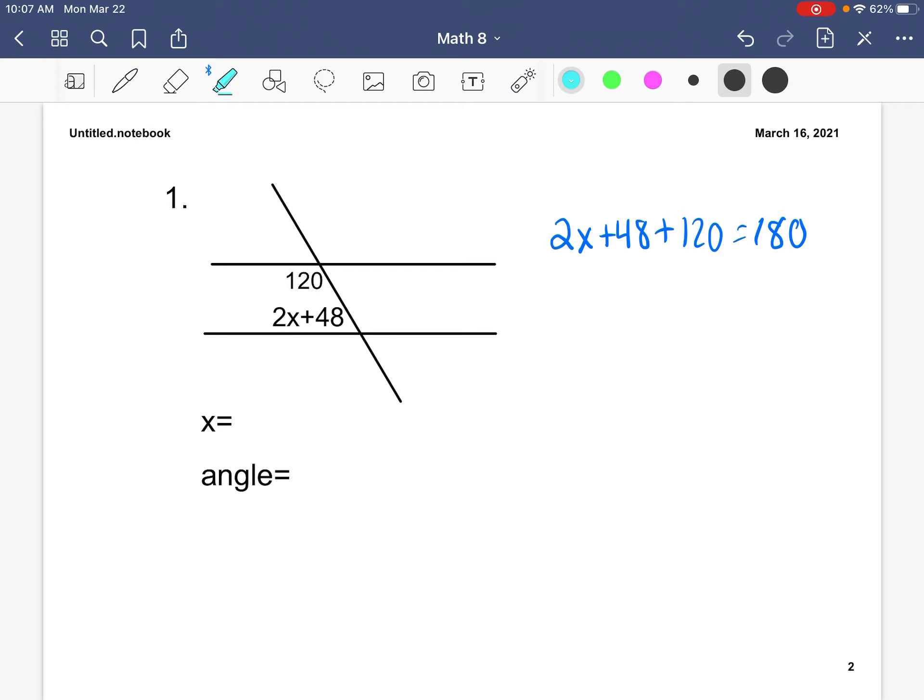The next thing I'm going to do is combine our like terms. So we are going to combine 48 and 120 together. So now we have 2x plus 168 equals 180. Now we need to subtract 168 from both sides, bring down our 2x and our equal sign, and we get 12. Then we're going to divide by 2, and we get x equals 6.